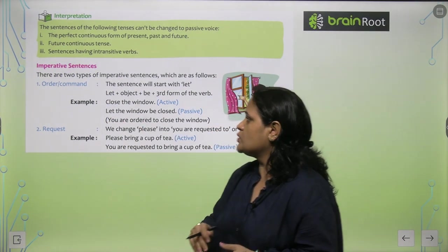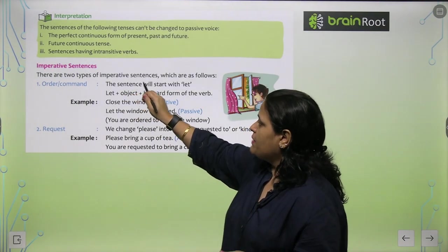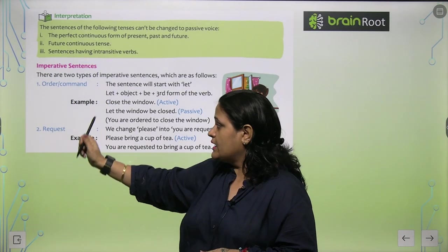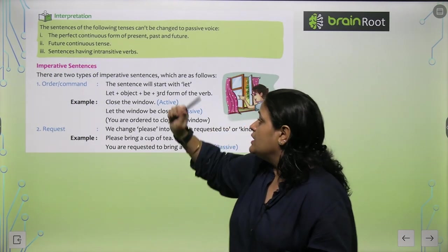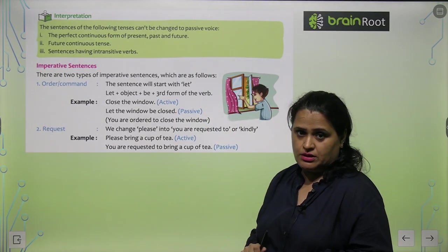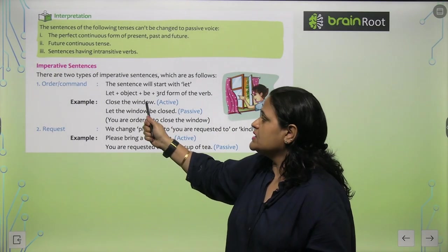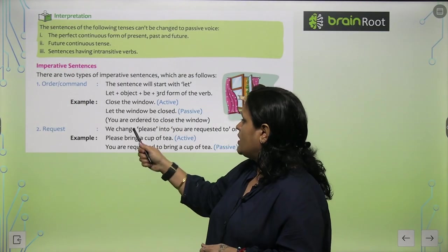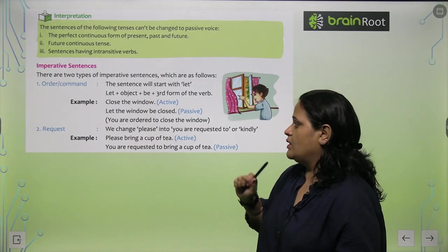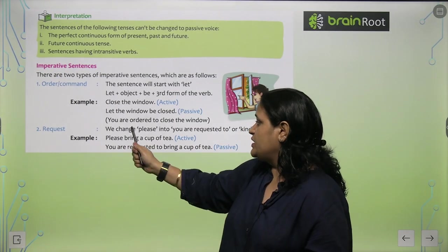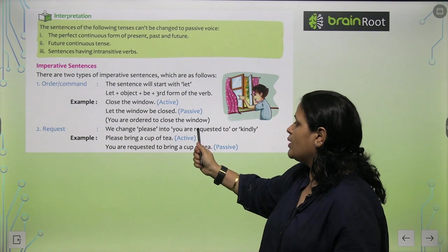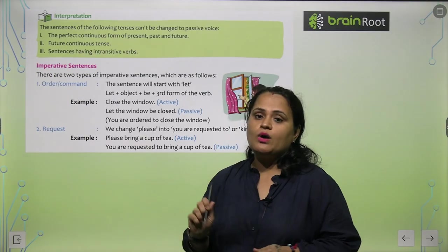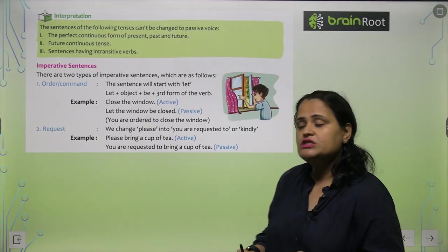Imperative sentences ko kaise banate hain? There are two types: either we give a command/order, or we make a request. For commands, the sentence will start with 'let' — 'Close the window' becomes 'Let the window be closed' or 'You are ordered to close the window.' For requests, we change 'please' into 'You are requested' — 'Please bring a cup of tea' becomes 'You are requested to bring a cup of tea.'